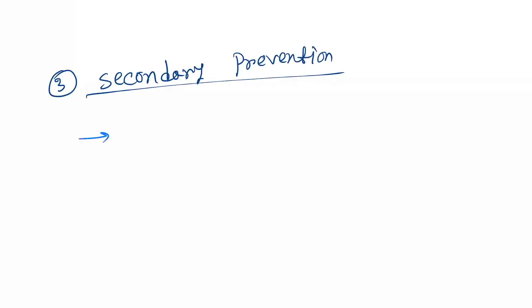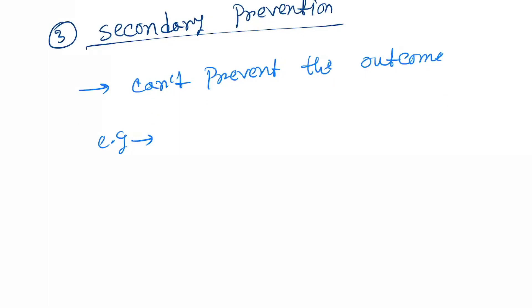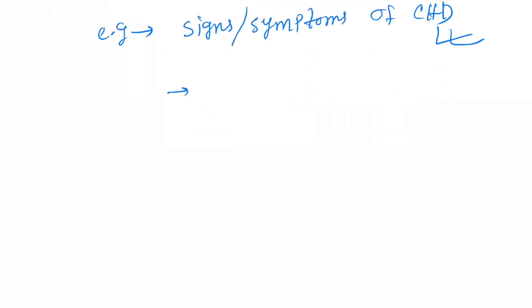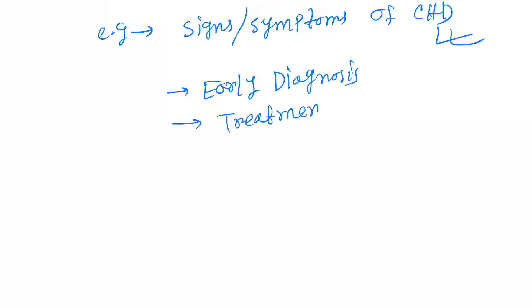The next level is secondary prevention. In secondary prevention, we cannot prevent the outcome. For example, smoking and alcoholism cause the signs and symptoms of coronary heart disease. So now we can do early diagnosis and also start the treatment. Treatment is the prevention at this level.